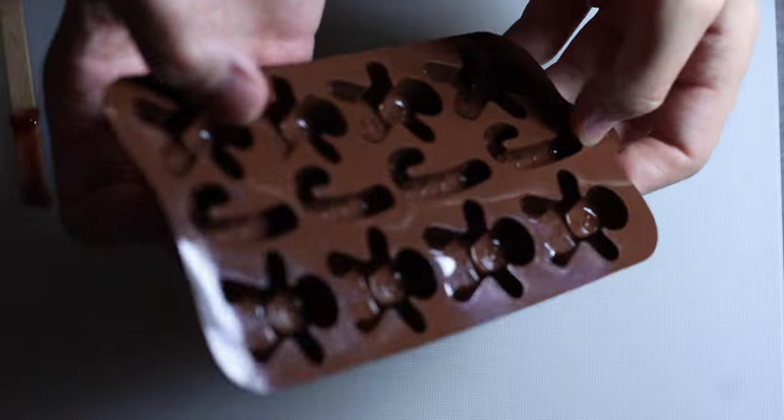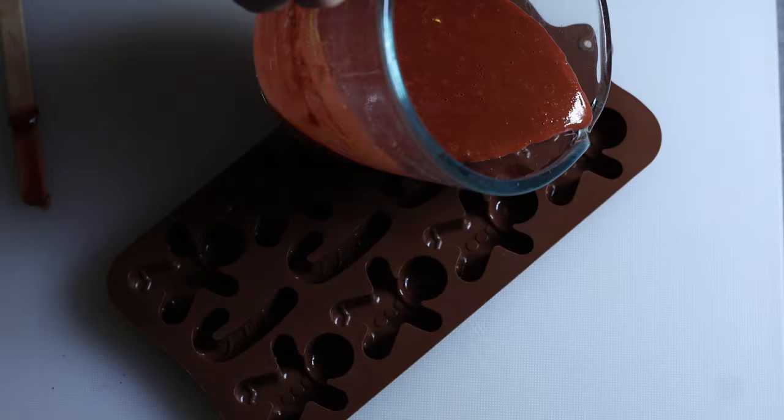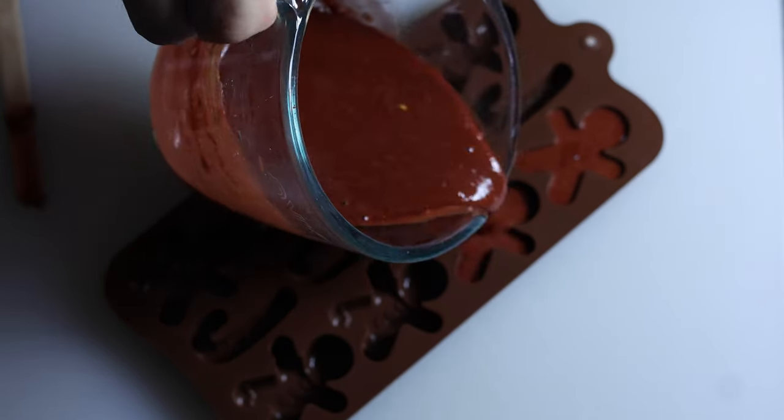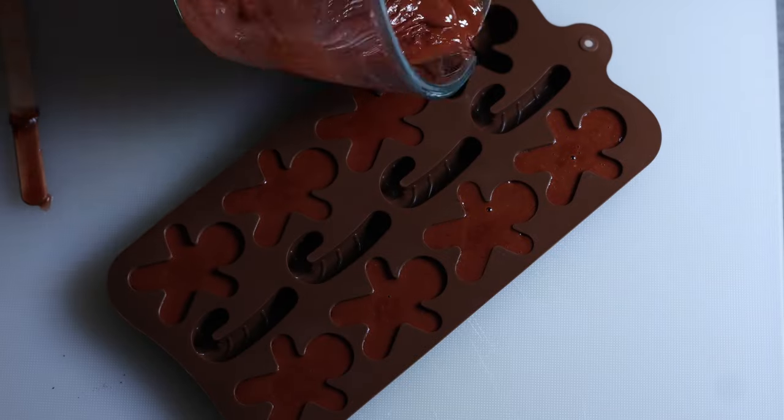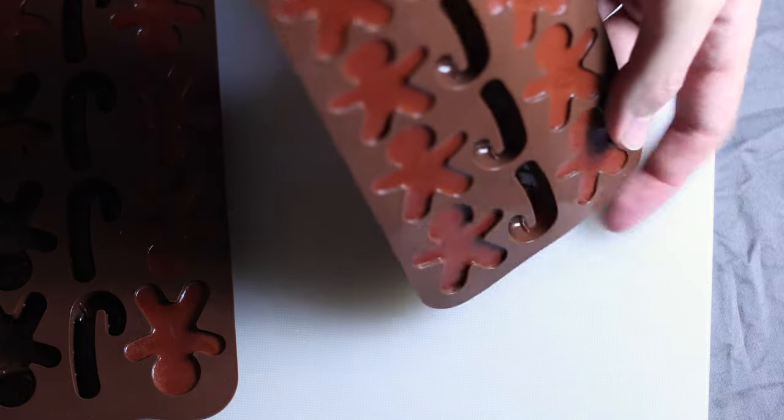I got these gingerbread-slash-candy-cane molds off of Amazon for around $12 for the two of them, which is a great price for little silicone molds, and these gingerbread people happen to be the perfect size for my application. Now it's time for me to break them in with my delicious-looking chocolate sauce. Speaking of chocolate sauce, I have a question. Why does soap look delicious?